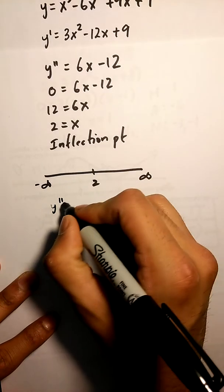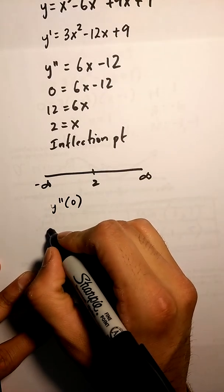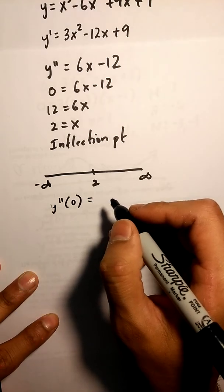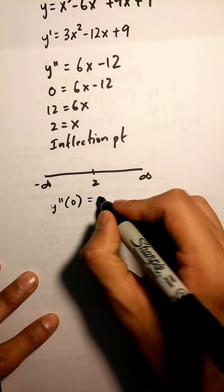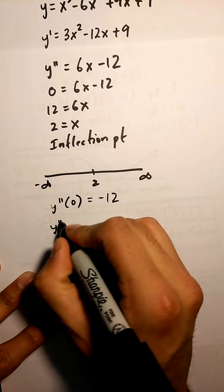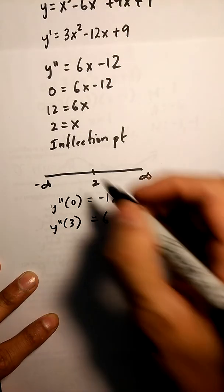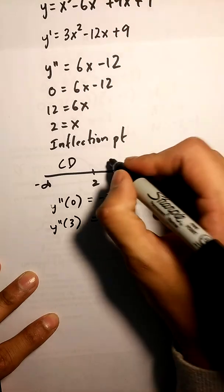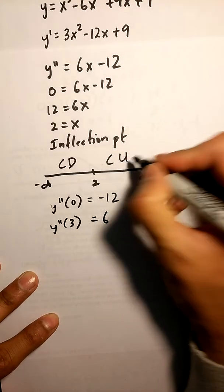I'm going to do y double prime of zero and y double prime of three, so we know this is concave down, concave up.